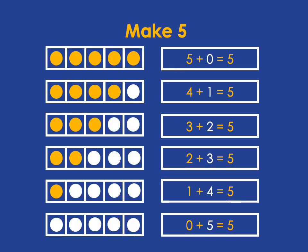So the kind of facts you need to know really fluently are these: 5 plus 0 is 5, 4 plus 1 is 5, 3 plus 2 is 5, 2 plus 3 is 5, 1 plus 4 equals 5, and 0 plus 5 equals 5.